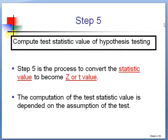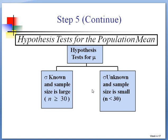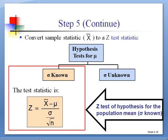Step 5, compute the test statistic value of hypothesis testing. Step 5 is the process to convert the statistic value to become Z or T value. To decide, we have to compute the Z or T value depends on the n, sample size n, the standard deviation σ. If the sample size n is greater than 30 and the standard deviation is known, we use Z. If the sample size is less than 30 and the standard deviation is unknown, we use T test. If the standard deviation is known and the sample size is large, which means that n greater than or equal to 30, we use Z. This is the Z test, and this is the formula. Sample mean minus population mean divide the population standard deviation, divide the square root of n.